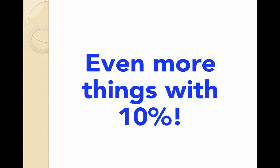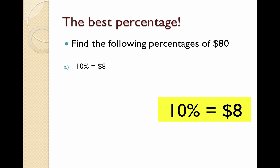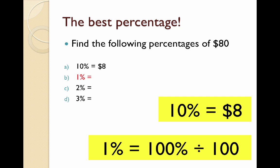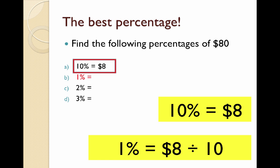But there are even more things you can do with 10%, rather than just finding multiples of 10 or 5. For instance, remember that 10% is $8? From that, I can find 1%, 2%, and 3%. To find 1%, we can take 10% and divide it by 10. That means I take $8 and divide it by 10 to get 80 cents. That's what 1% of $80 is.